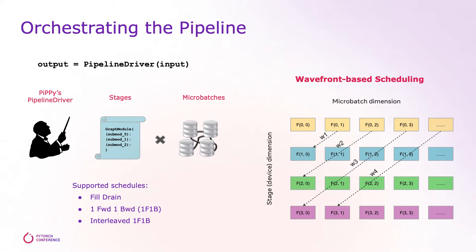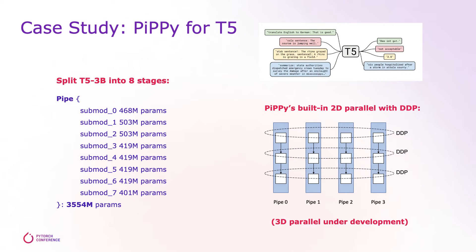Now let's look at an example. Here we use PIPI for T5. T5 is a language model that can perform a set of tasks like translation, text summarization, and question answering. On the left hand side, we show that PIPI can split the T5 model into roughly eight stages, each with roughly the same size in terms of parameters.